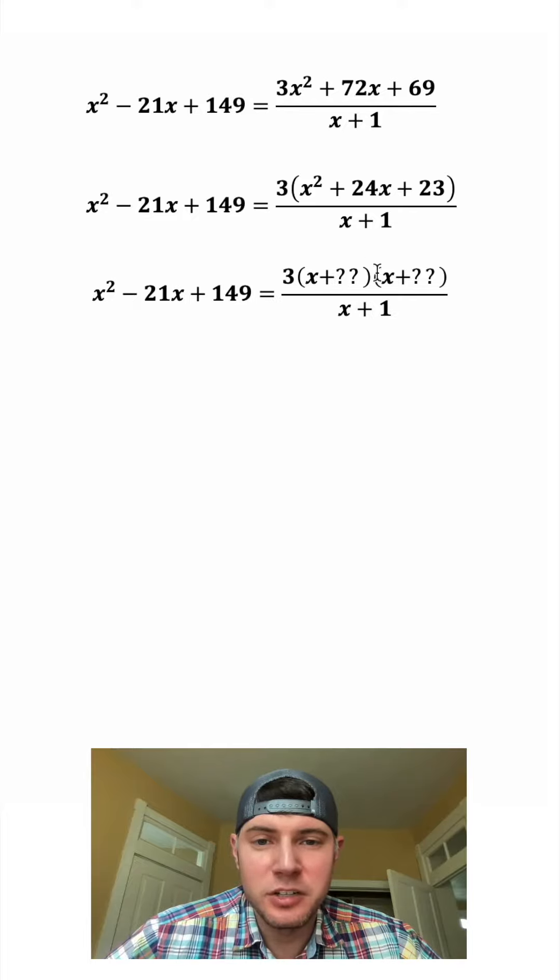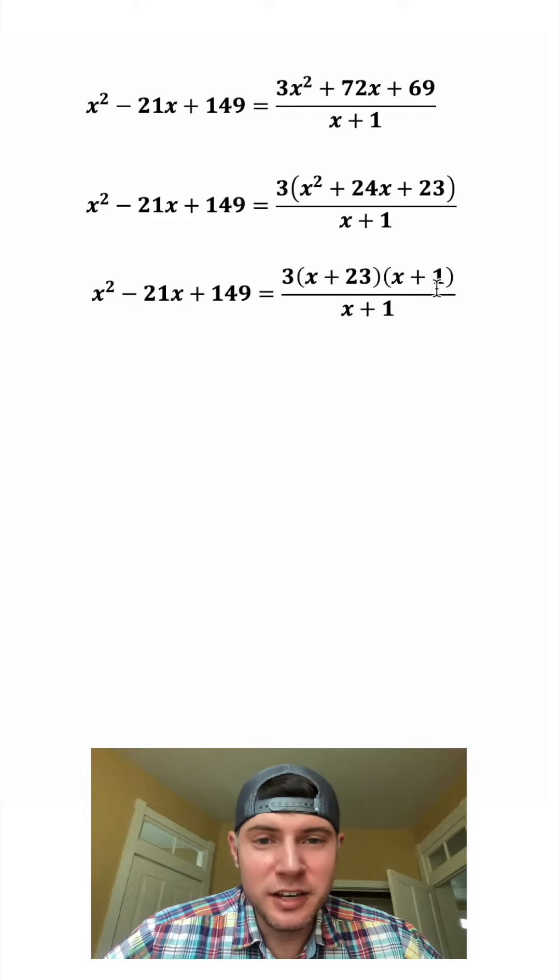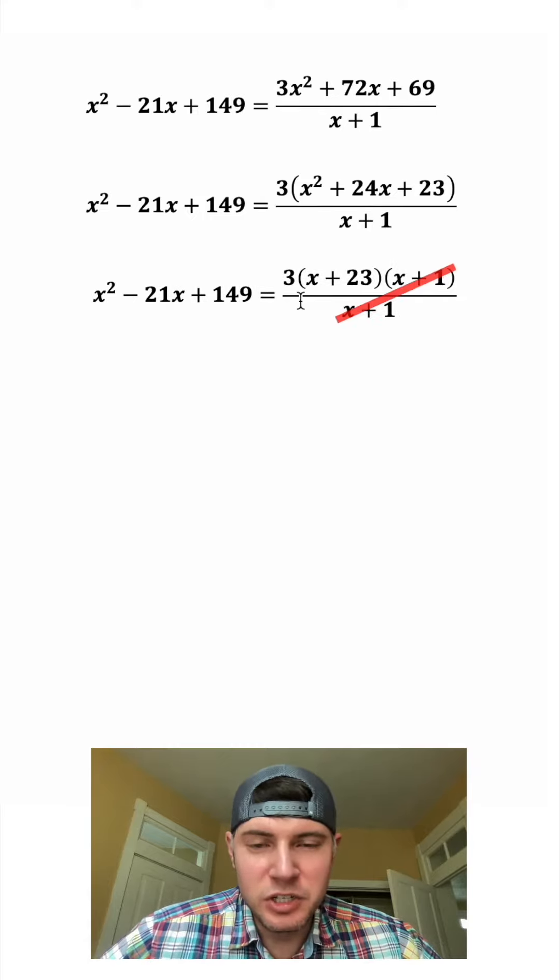So we'll copy everything else down, plug in 23 and 1. On the right hand side, top and bottom can both be divided by x plus 1, so these cancel each other out. Leaving us with just 3 times x plus 23 on the right hand side.